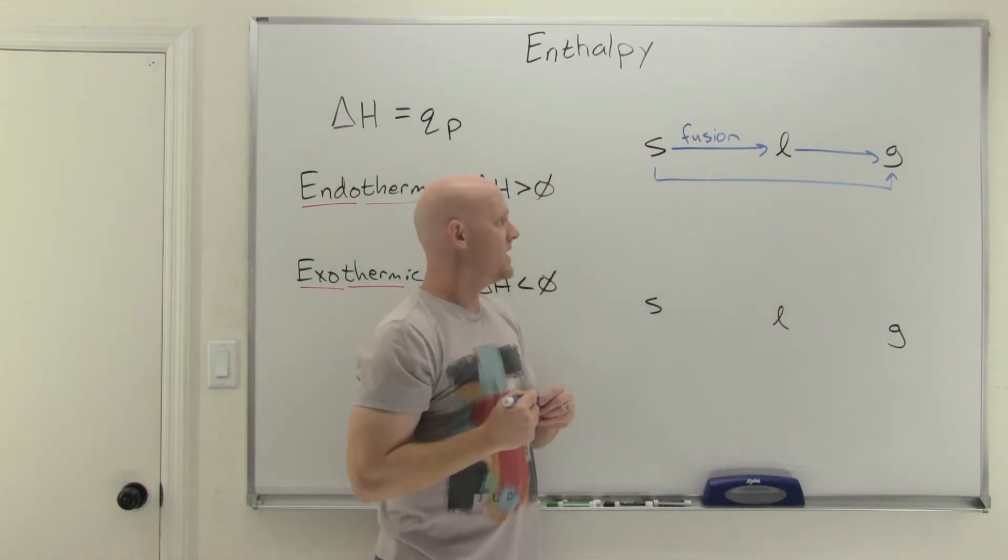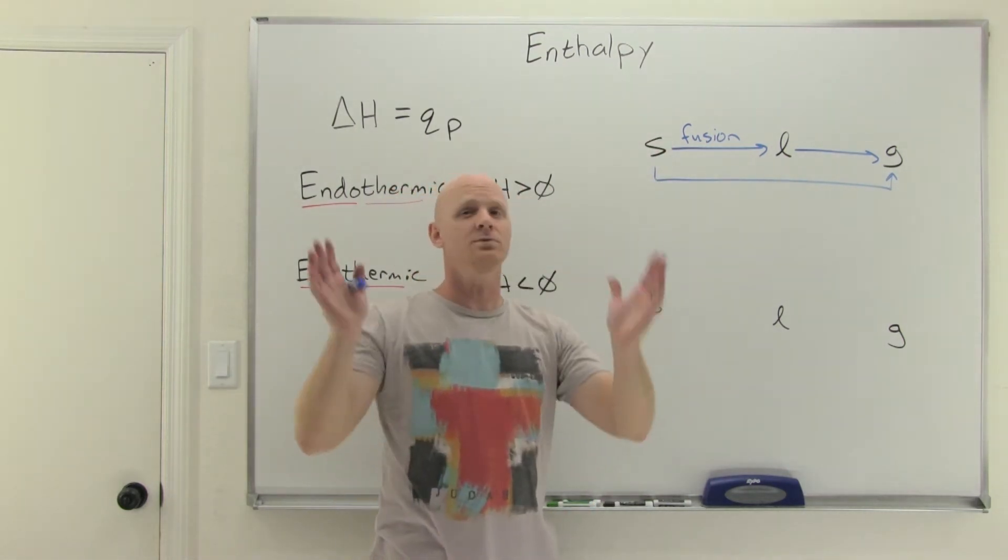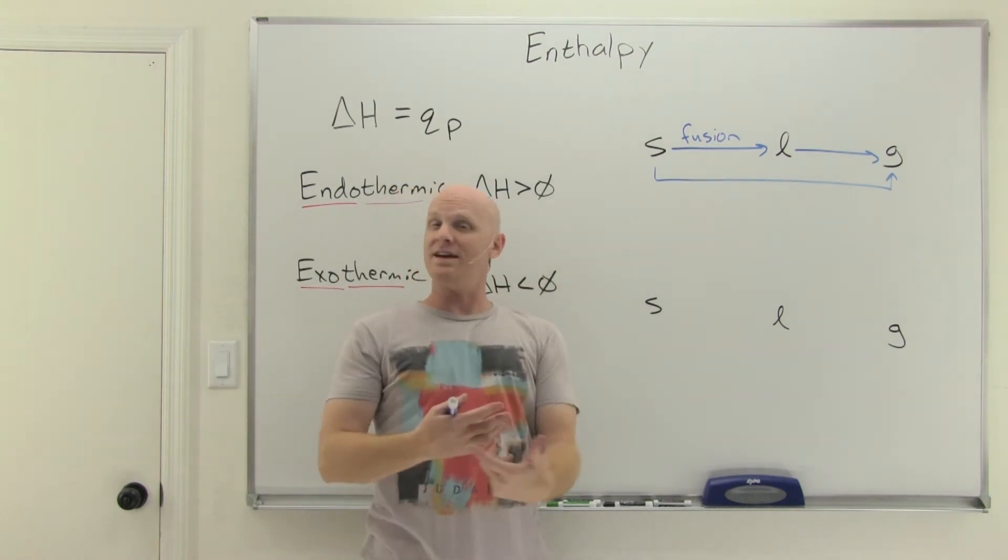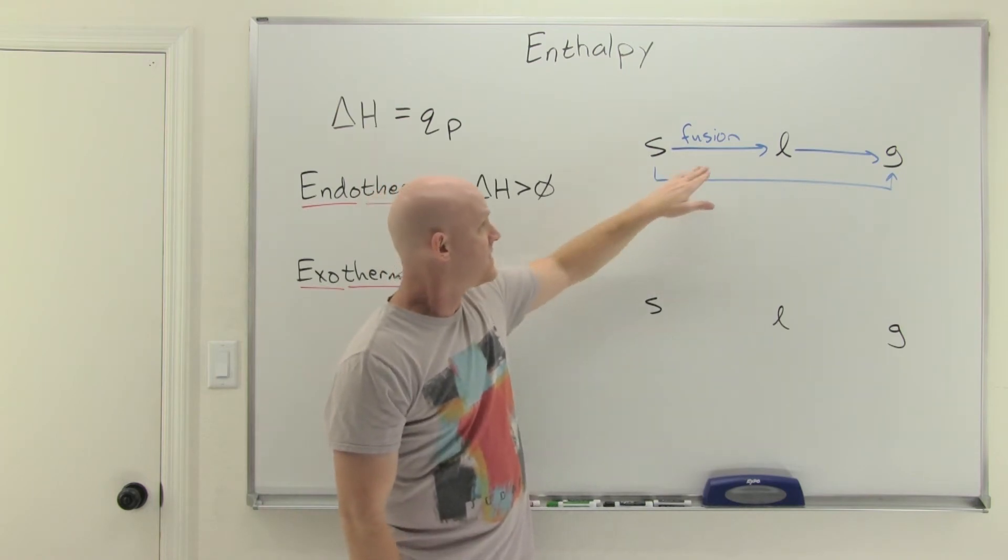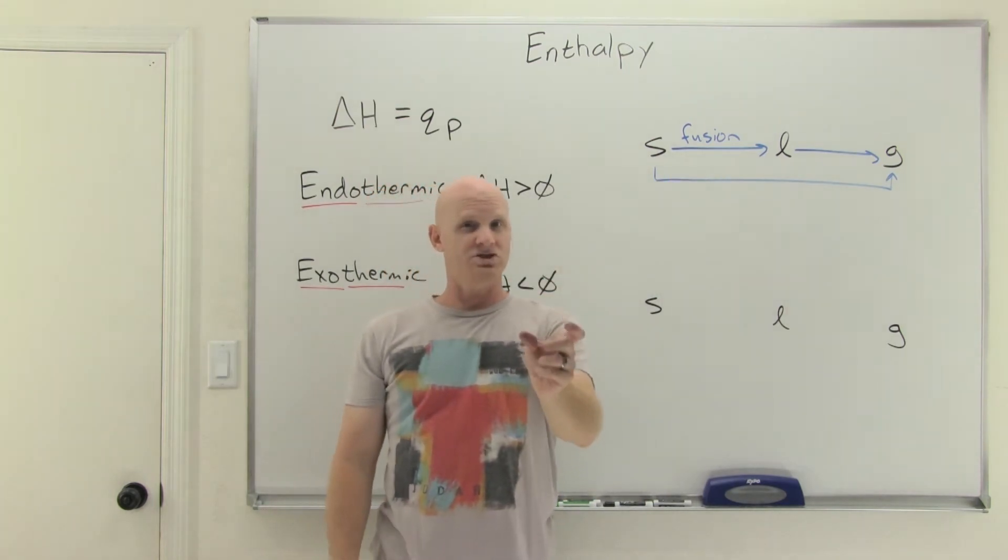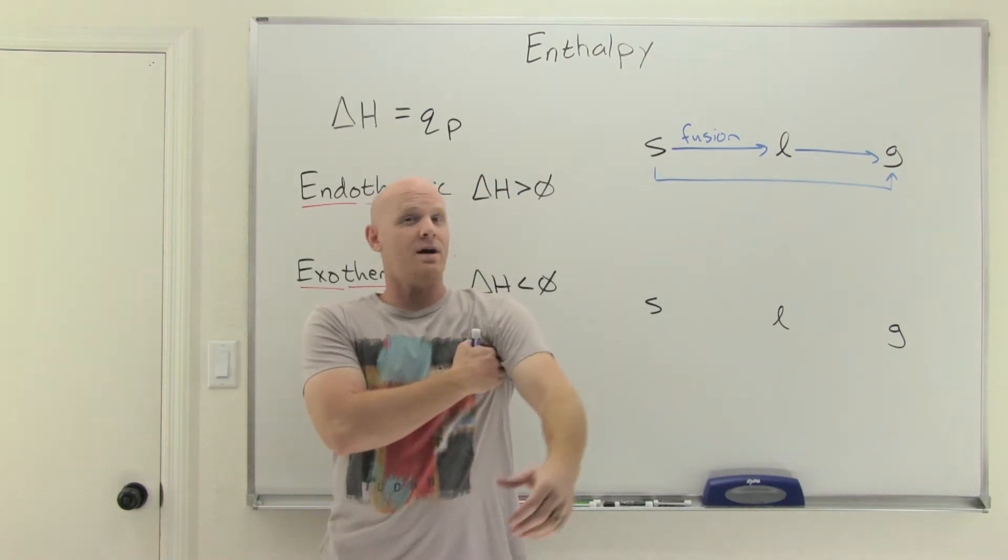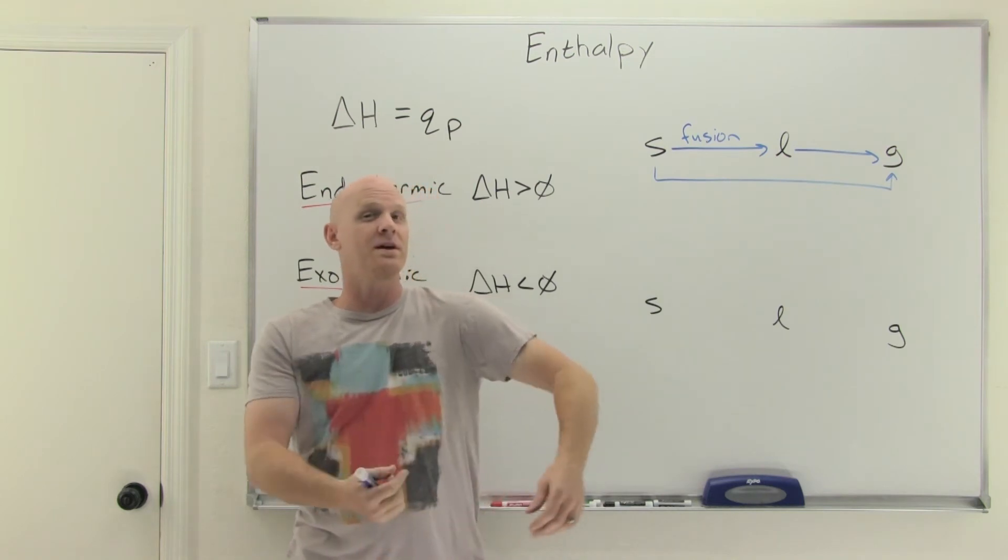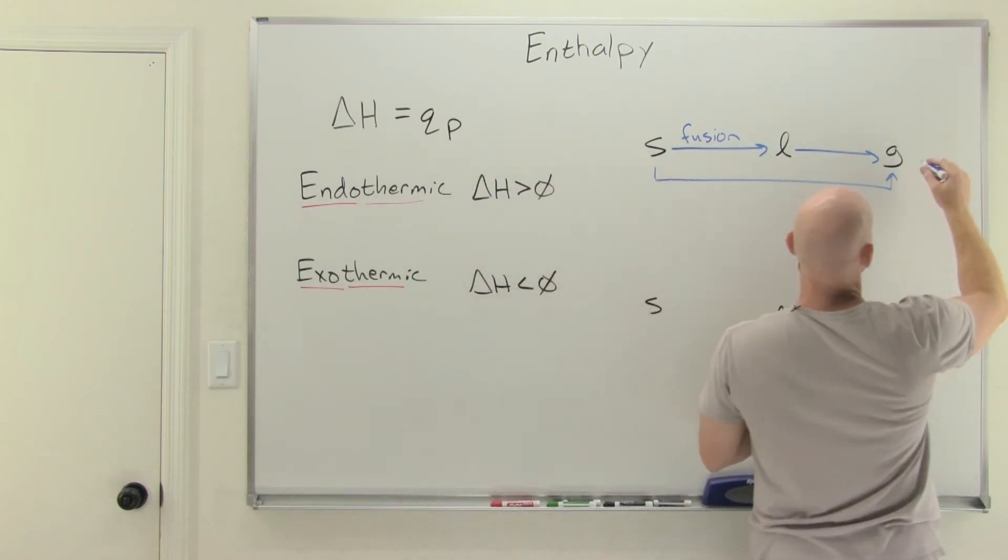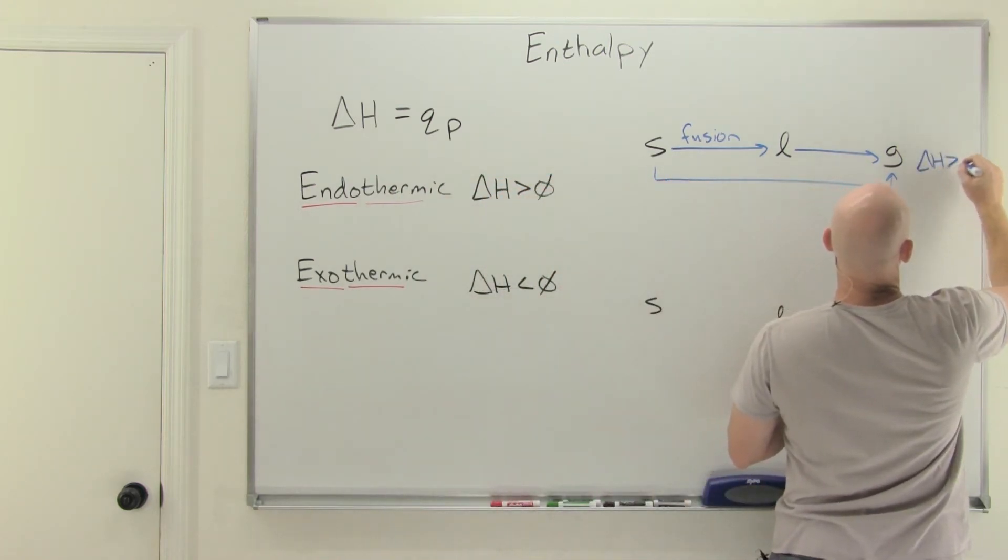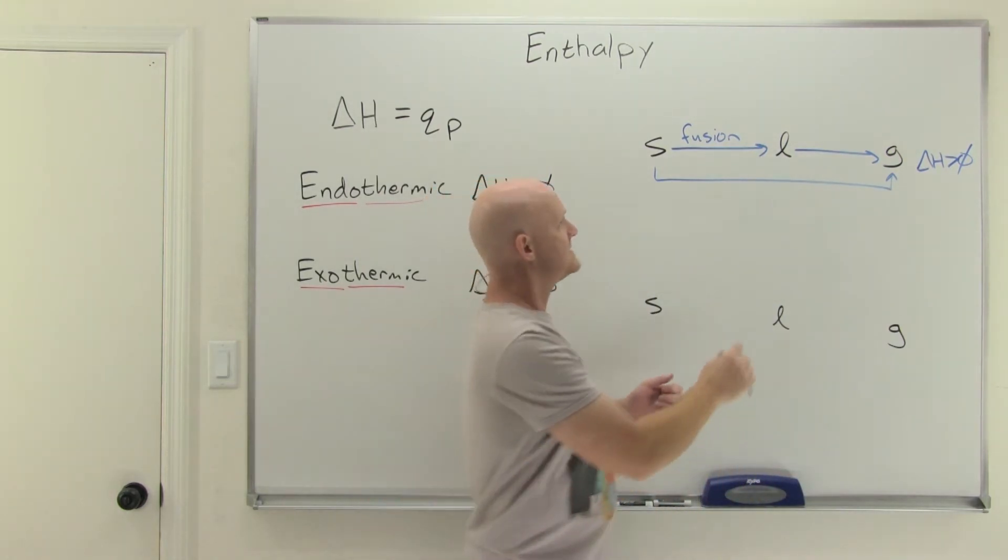It seems kind of backwards - fusion seems like it should not be what we call melting, but it is. You need to know that. You should also know that melting something requires heat. If I have a piece of chocolate sitting here on the table, it's just going to sit there. But if I stick it in my armpit, it's going to melt because in my armpit it's being supplied with heat from the surroundings. As a result, we say that these are endothermic processes. Delta H is positive. They all need heat to happen.